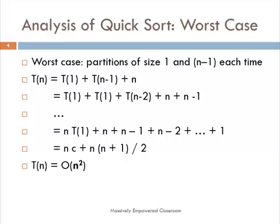Considering the worst case of quicksort, as discussed in the previous lesson, that happens when we do not get equal partitions. The true worst case is when every time partition is called, it gives us highly skewed or the most unequal kind of partitions. For example, the first call to partition might give us only one element in the left partition and n-1 in the right. The next call to partition for n-1 elements might give us only one element on the left and n-2 on the right, and so on.